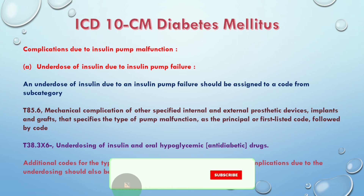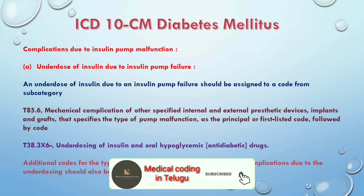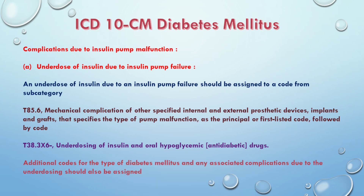The insulin pump is involved in insulin production. Insulin production is produced by the body. What we have to understand is that insulin is used to control the glucose levels. When there is an underdose, blood glucose levels are extremely elevated, leading to hyperglycemia.